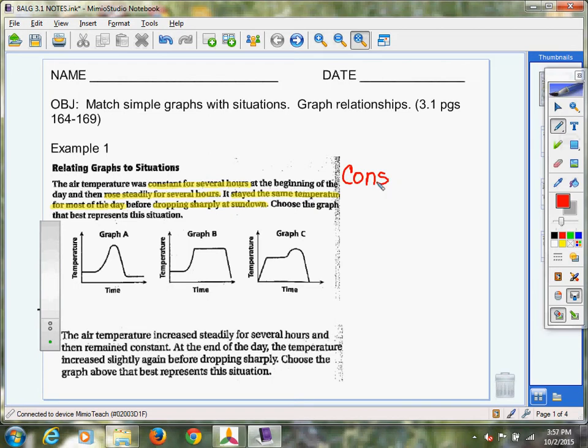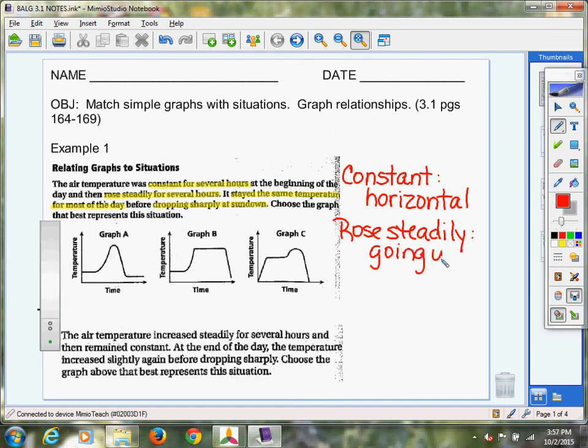So we've got constant, and on the graph, that's just horizontal. That means it's not going up, it's not going down. So that's represented with a horizontal line. Rose steadily, that just means it's going up. Stayed the same temperature. So I'll just say stayed the same. And what that tells me is that it was horizontal again. It didn't go up, it didn't go down, it stayed the same. So that's going to be represented by a horizontal piece.